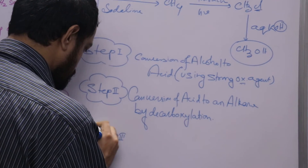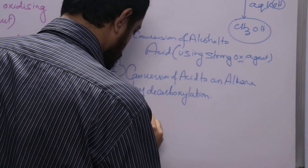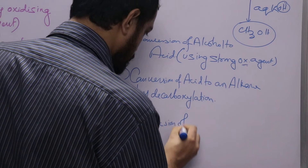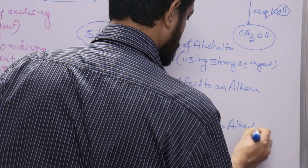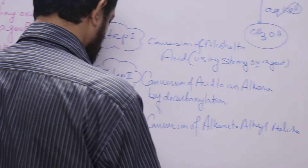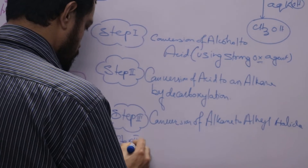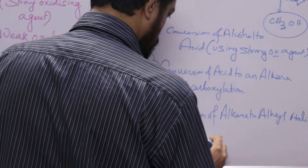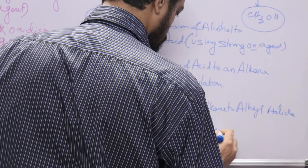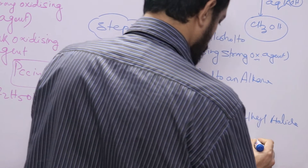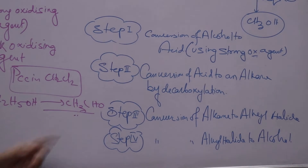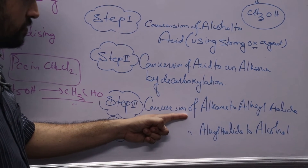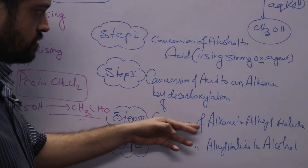Step number 3: conversion of alkane to alkyl halide. And step number 4: conversion of alkyl halide to alcohol. So these are the 4 steps you need to follow — that is oxidation, decarboxylation, substitution of H by Cl, and again substitution of Cl by OH.